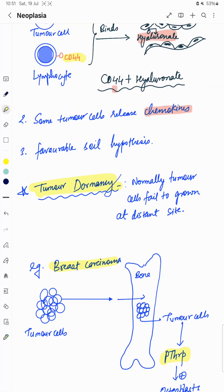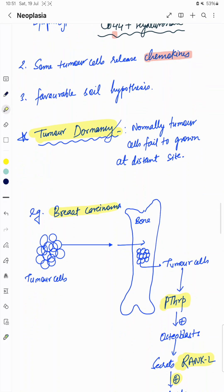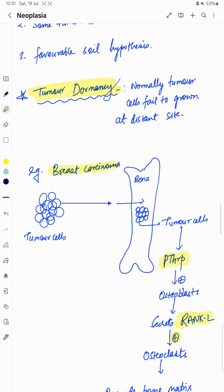Now we will discuss tumor dormancy. What is tumor dormancy? Normally, tumor cells fail to grow at distant sites. This is a protective mechanism of our body. But how they colonize a different site or escape from tumor dormancy, we will see by an example.